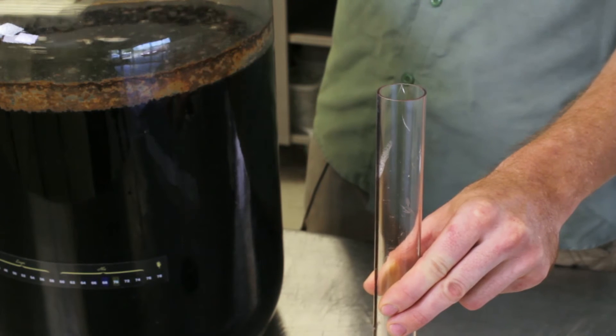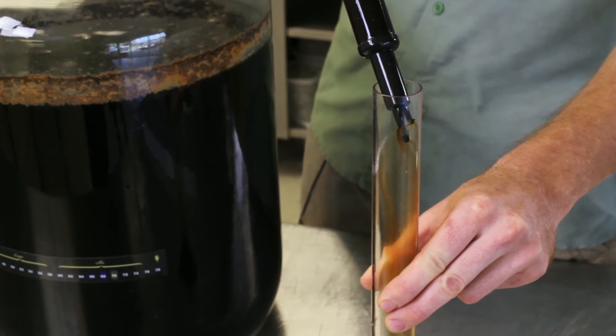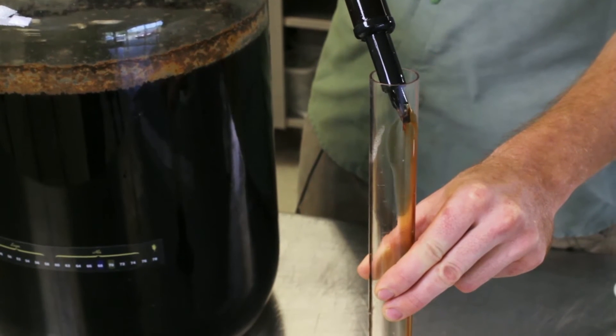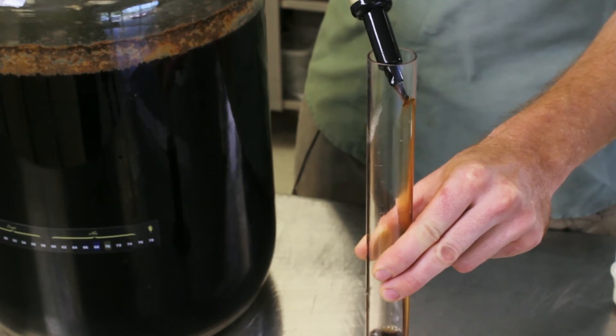Put the sample in your sanitized test jar. If using a thief, you can empty it into the test jar by pressing the tip against the side of the jar. Note that you may have to take two samples with the thief to get enough liquid for a reading.